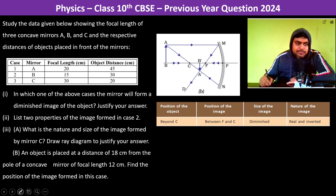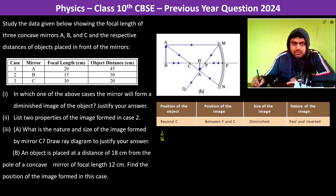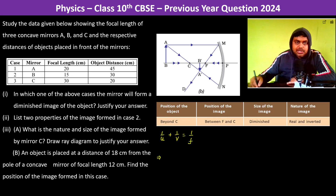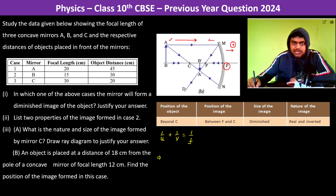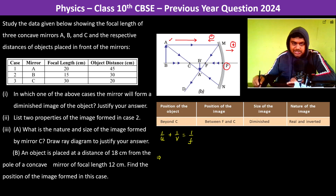We can also justify this by the mirror equation: 1/u + 1/v = 1/f. In the ray diagram, the object is placed in front of the mirror. From the pole, going right (direction of incident rays) is positive, going left is negative. So u = -45 cm, v is unknown, and f = -20 cm.